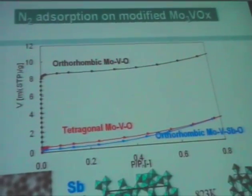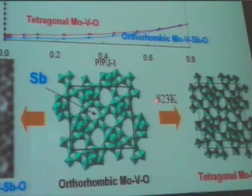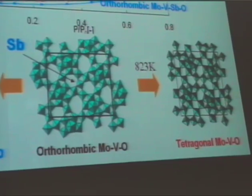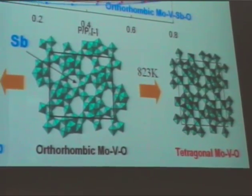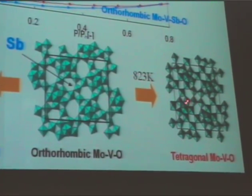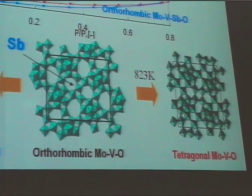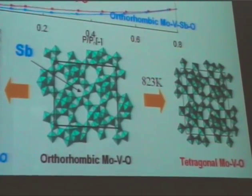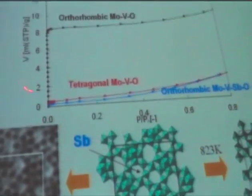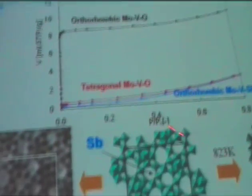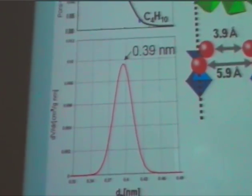Without antimony, this material is not so stable at high temperature. For instance, if you calcine it in air or nitrogen at 823 Kelvin, you will have a different phase. It transforms to a lateral phase, which has no channel at all. Then it doesn't show any adsorption of nitrogen. So it is obvious that the channel unit is responsible for adsorption of small molecules.